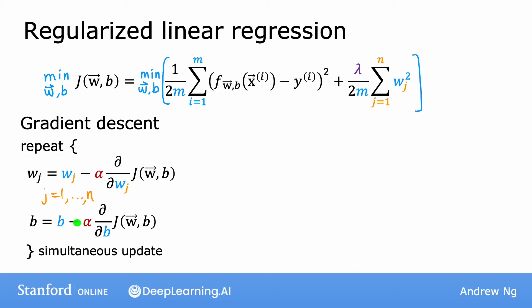In fact, the updates for regularized linear regression look exactly the same, except that now the cost j is defined a bit differently. Previously, the derivative of j with respect to w_j was given by this expression over here, and the derivative with respect to b was given by this expression over here.